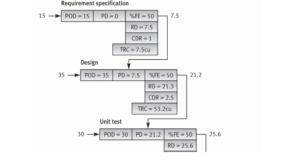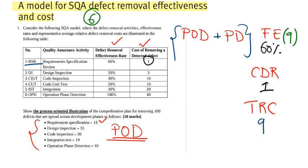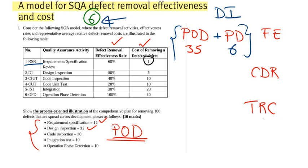Be careful here: it is not the filter effectiveness value itself that gets passed on. After you calculate the filter effectiveness, you subtract the removed defects from the total. The difference is what gives you the past defects for the next stage. So 6 defects proceed to the design inspection stage as past defects.